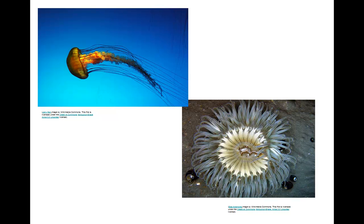Here are two examples. To the upper left would be the jellyfish, which would be the medusa body form. And then here on the lower right, a sea anemone. You can see the radial symmetry and also the tentacles that hold the stinging cells, the cnidocytes.